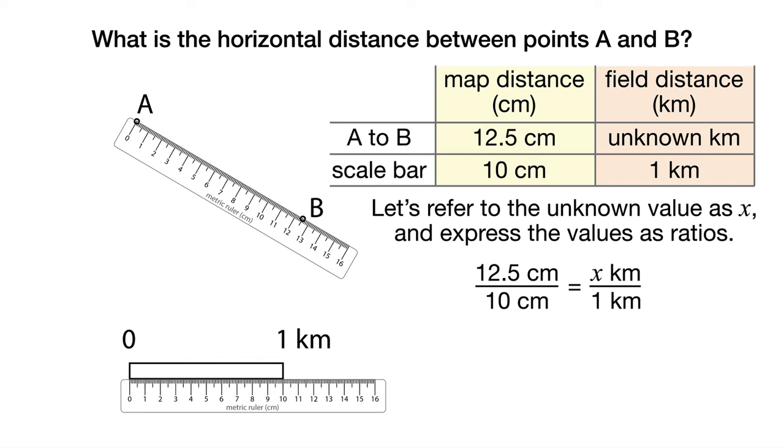We'll refer to the unknown value using the variable name x and organize the data values into ratios. The ratio of 12.5 centimeters to 10 centimeters is the same as the ratio of our unknown value expressed in kilometers to 1 kilometer.